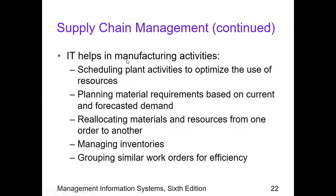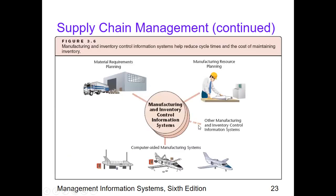IT helps in manufacturing activities such as scheduling plant activities to maximize resource usage, planning material requirements to forecast current demand, and transferring or reallocating materials when needed. We also manage inventories and group similar work orders to minimize the ideation and preparation effort, thus minimizing resources. Here are the items involved in manufacturing and inventory control information systems.